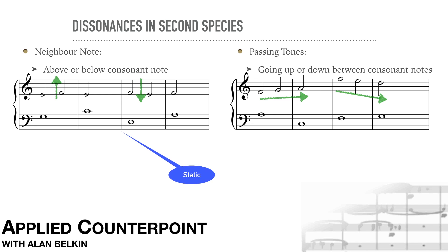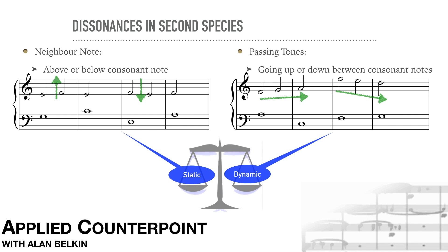Neighbor notes are essentially static, whereas passing notes are dynamic — they create novelty. A melody which consists mainly of neighbor notes is going to be very static. One which uses mainly passing notes is going to be always climbing up and down, but never a moment's rest. So we need to find a balance between the two.